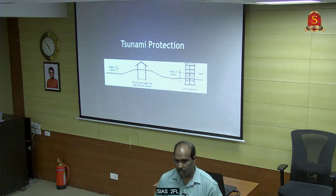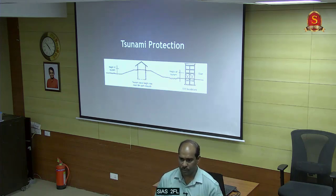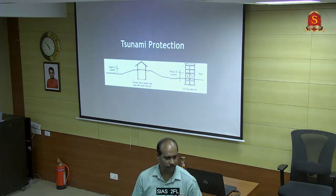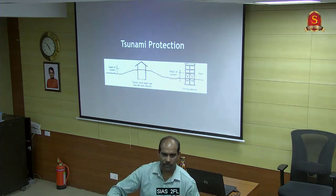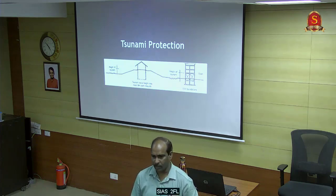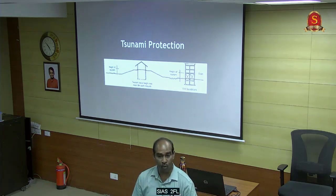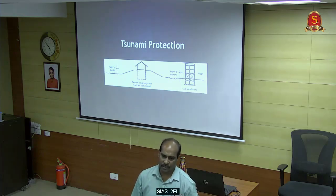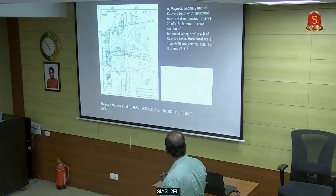Mangroves can stop tsunami waves but you can only plant them where you have wetlands. The mangrove roots are very deep and have a spreading nature, which reduces the velocity of the tsunami. You can also go for bypass walls, breaking walls, and other engineering measures to reduce wave height.